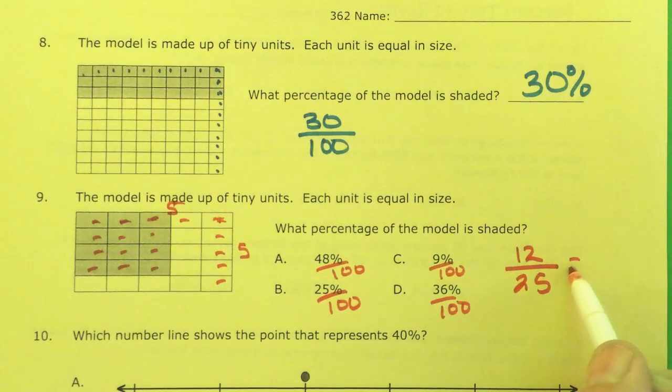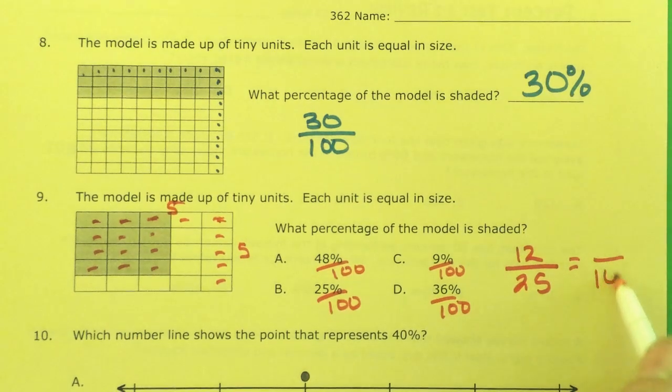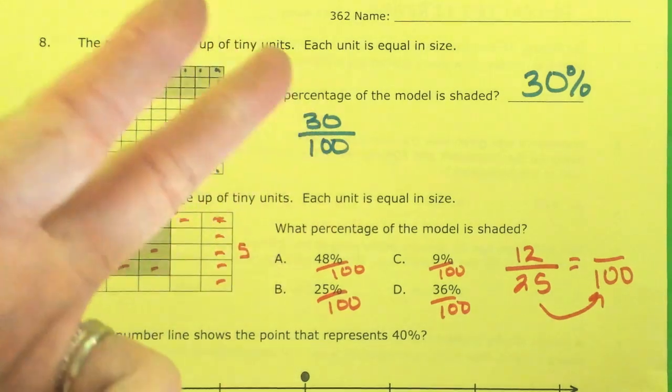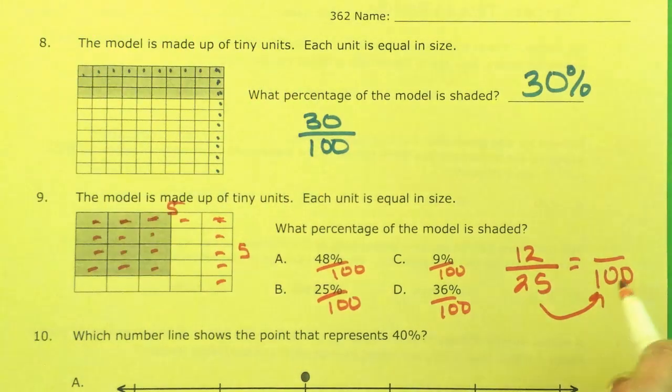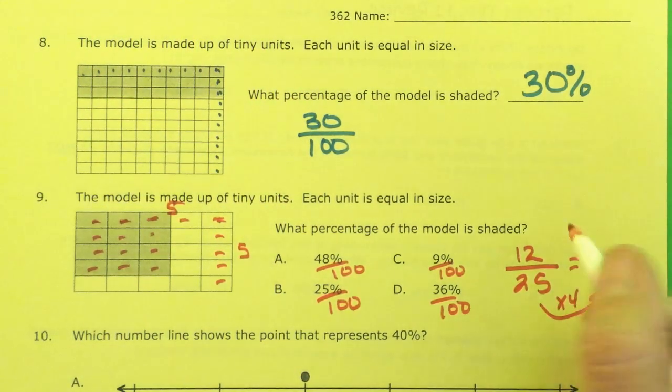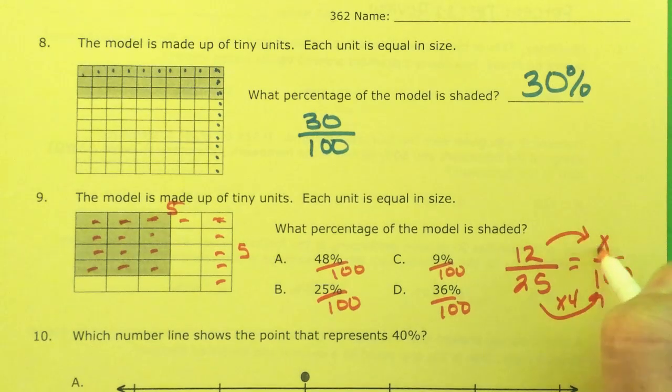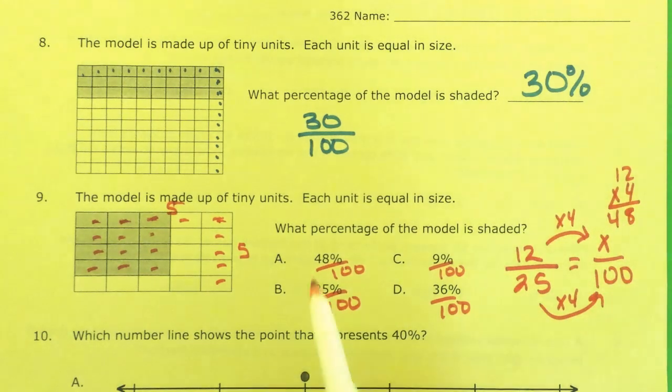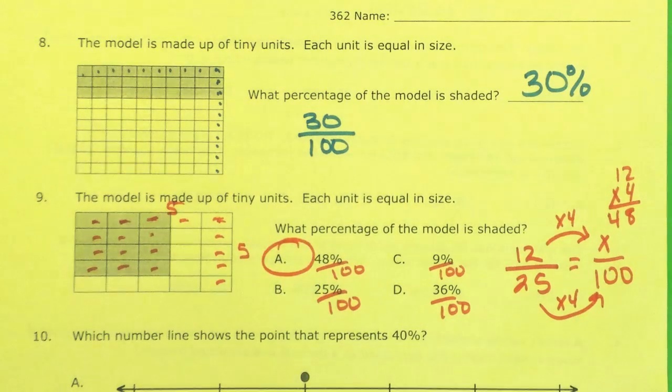I'm going to make my 25 build up to 100. How does it get there? 25, 50, 75, 100. Times 4. And then I figure what's 12 times 4. 2 times 4 is 8. And 1 times 4 is 4. 48. 48 percent.